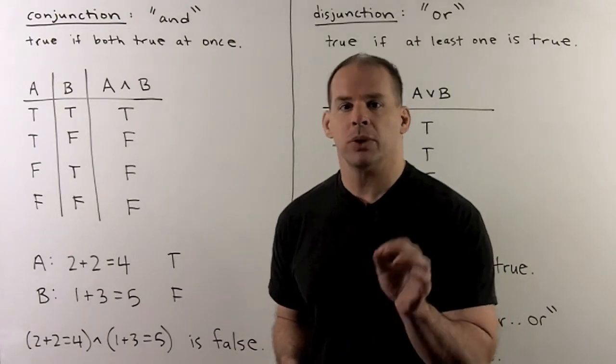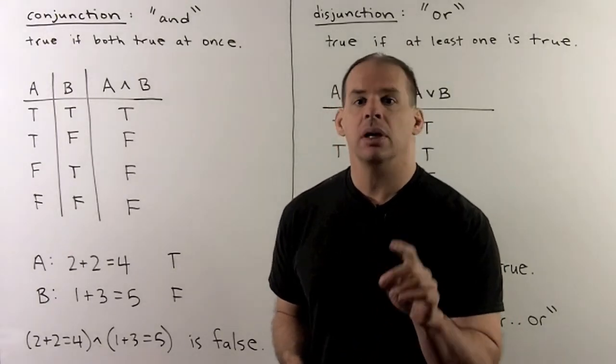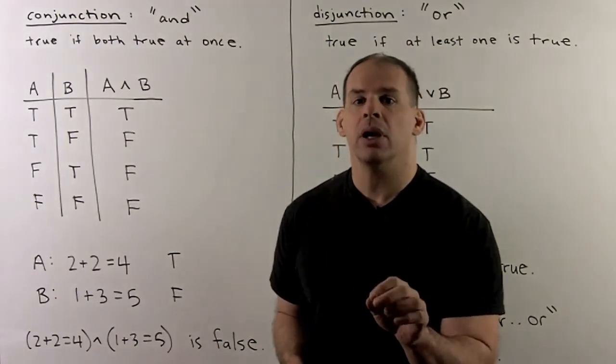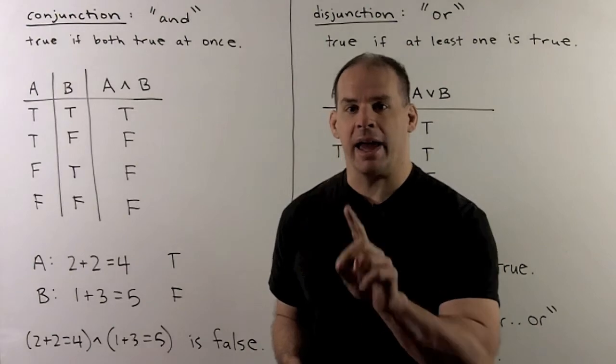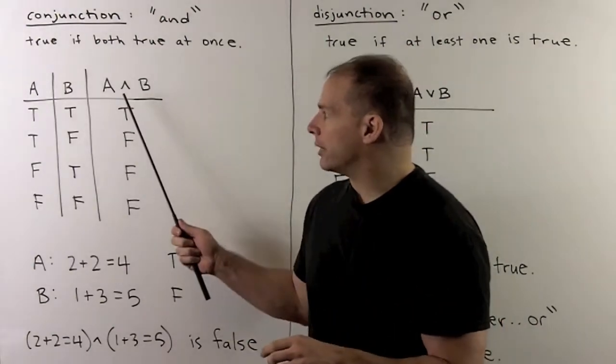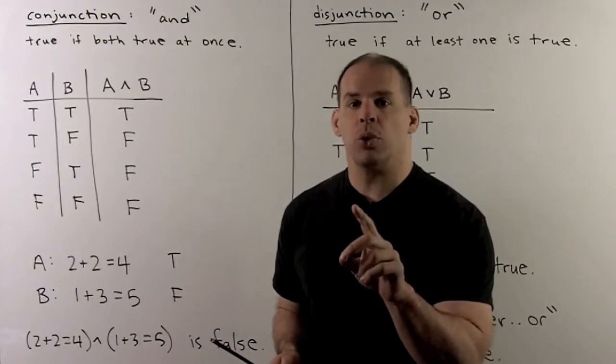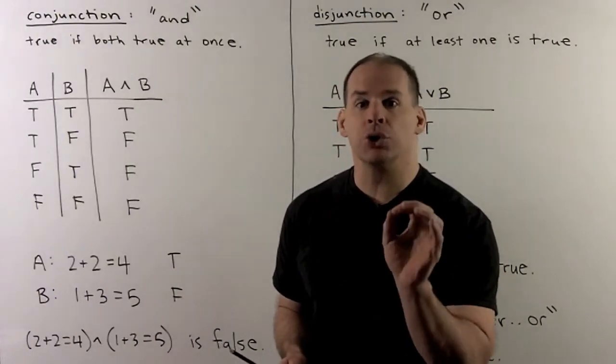For our next operation, we have conjunction. Conjunction takes 2 statements, we call them A and B, returns a new statement that we call A and B. We write this with a hat. A and B will be true only if both A and B are true at once.